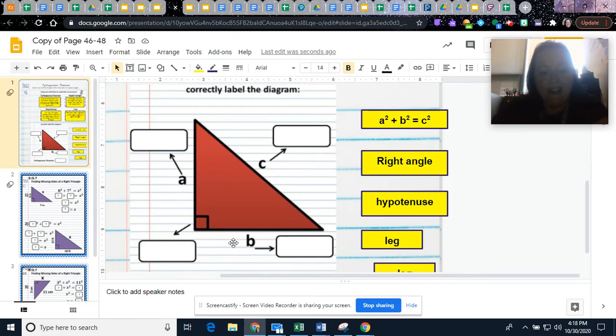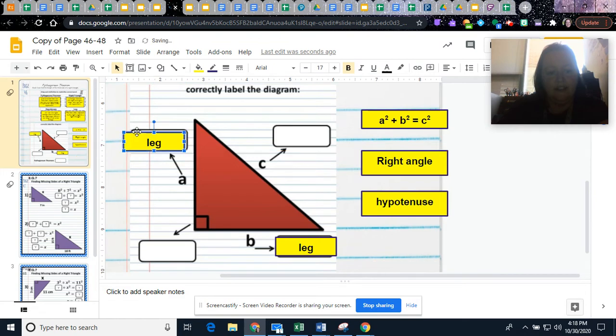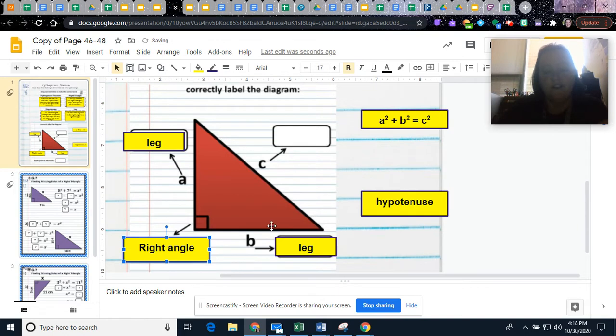So A and B, you'll see here is the right angle. The A and B, the two that make the right angle, those are legs. You're going to put leg there and leg here. And then this is the right angle. The Pythagorean theorem is only going to work if it is a right triangle.